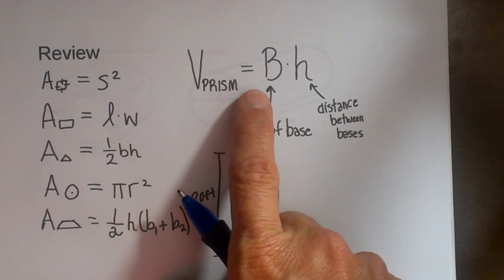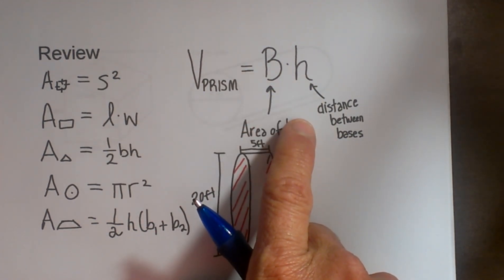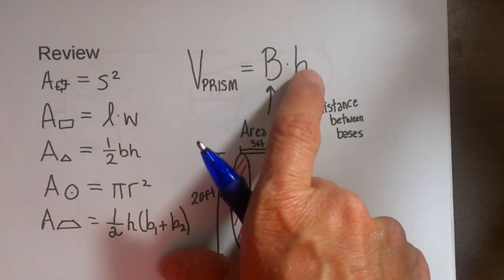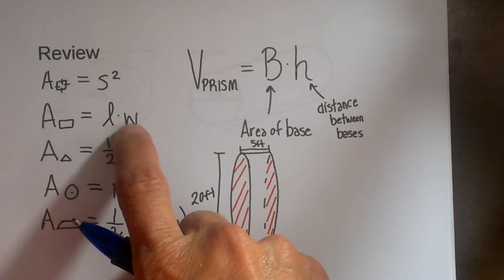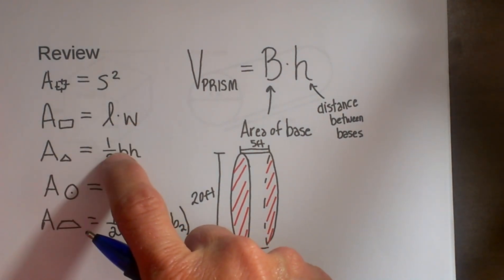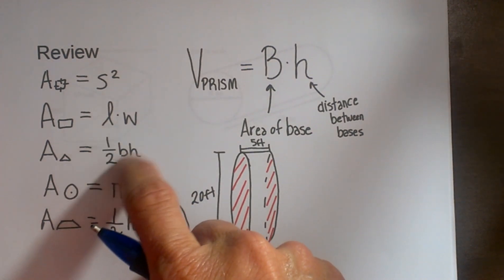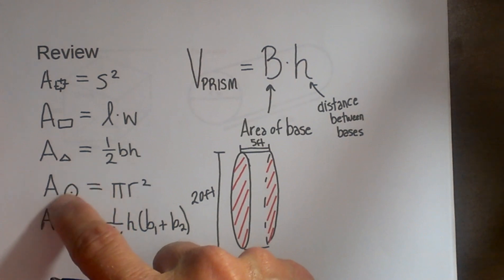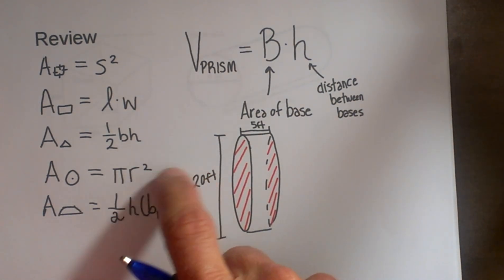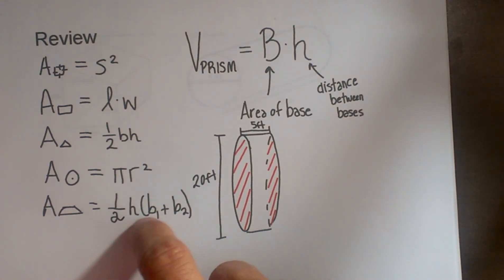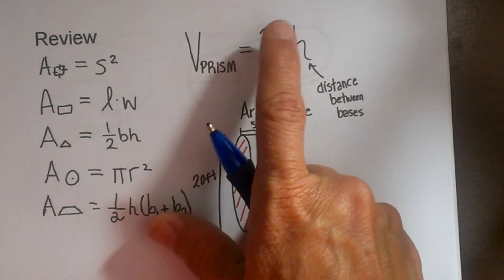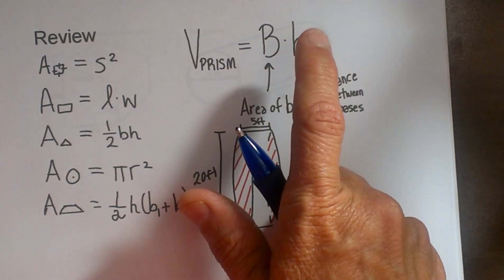Here is our formula: the volume is equal to the base area times the height. The base area changes based on the shape of the base. If it's a square: s² × height. If it's a rectangle: length × width × height. A triangular prism uses one half base times height of the triangle, then times the height of the prism. A cylinder uses π r² times height. A trapezoid uses one half the height times the sum of the bases, then times the height of the prism.